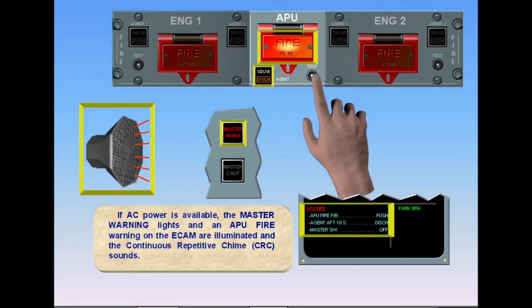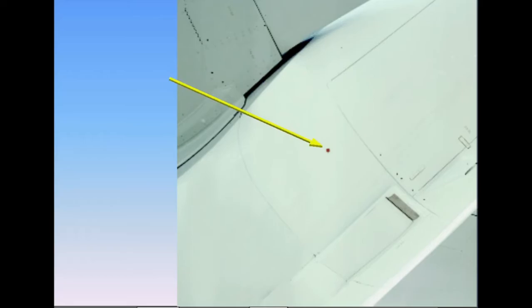The APU Fire Bottle Indicator, red disc, is checked during the walk-around. The disc is an indication that the fire bottle has not been discharged. Note, there is no such indication for the engine fire bottles.